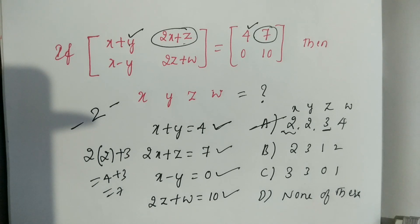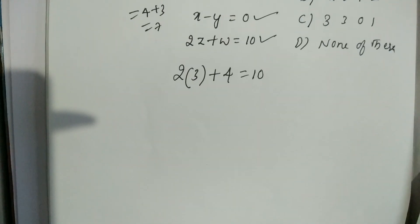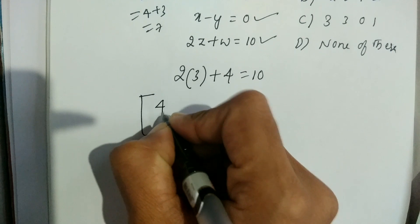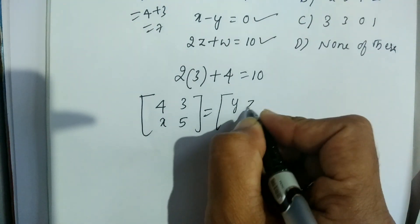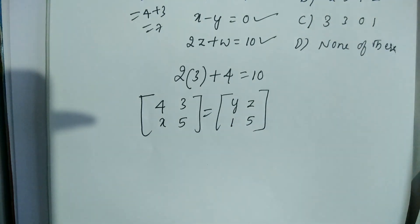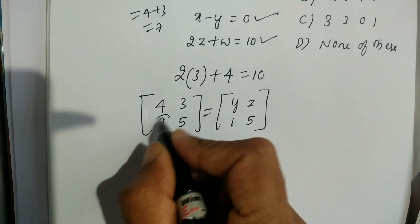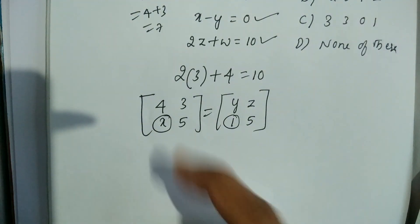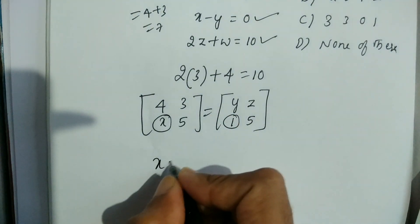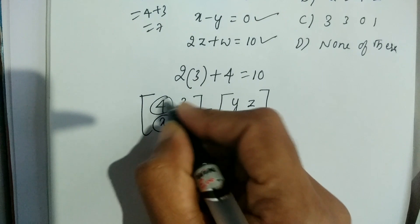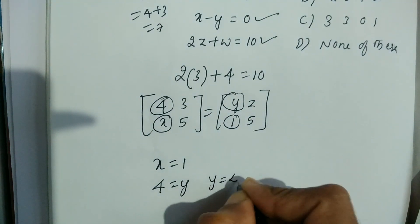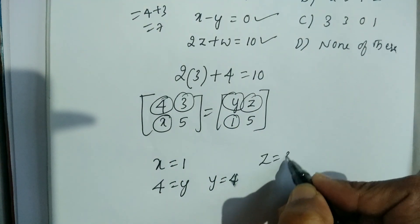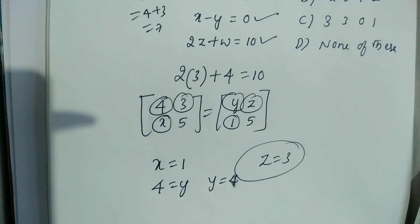Here is another simple example: if the matrix [4, 3; x, 5] equals [y, z; 1, 5], then what are the values of x, y, and z? This is a very easy one-mark question. x equals the third entry, so x = 1. The first entry gives y = 4. And z = 3. Easy.